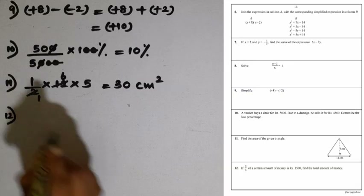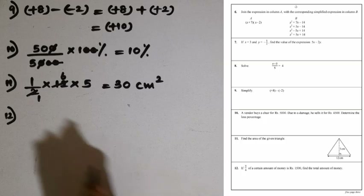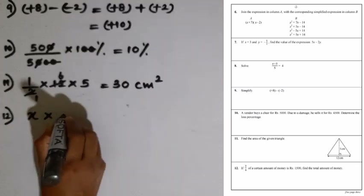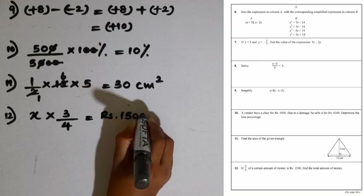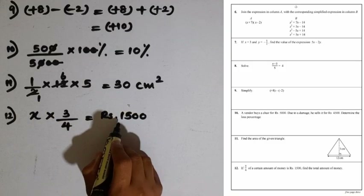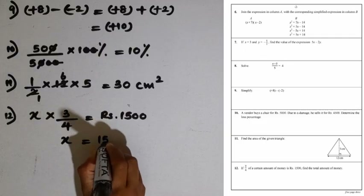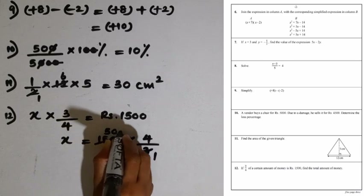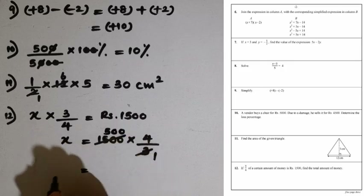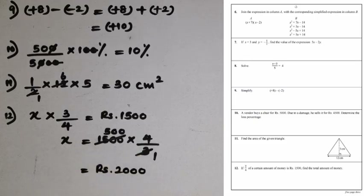Question number 12: if 3 over 4 of a certain amount of money is 1500 rupees, find the total amount. Taking the total amount as x, we have x multiplied by 3 over 4 equals 1500. We find x by multiplying 1500 by the reciprocal of 3 over 4, which is 4 over 3. Cancelling, 500 multiplied by 4 is 2000. The total amount is 2000 rupees.